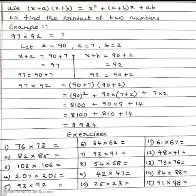So 97 = 90+7, which is x+a, and 92 = 90+2, which is x+b.